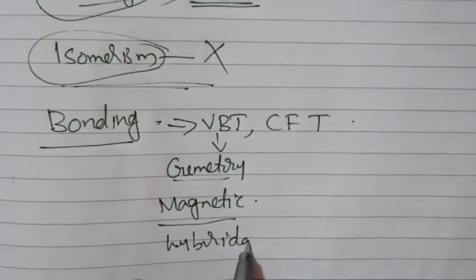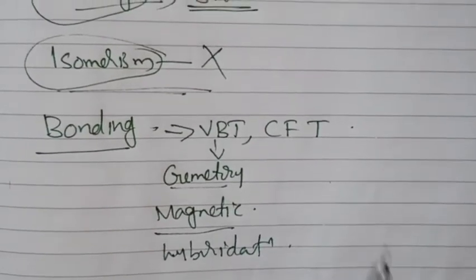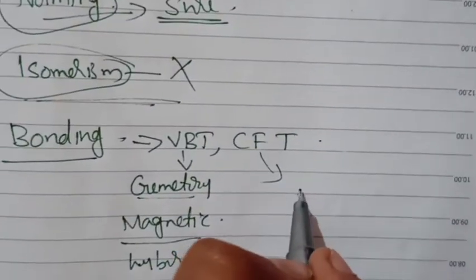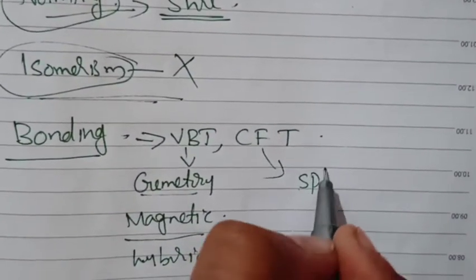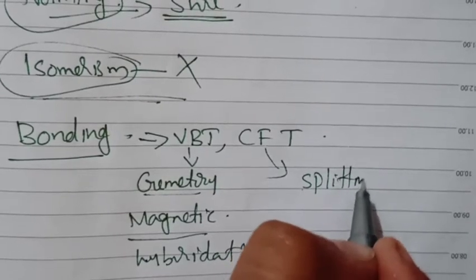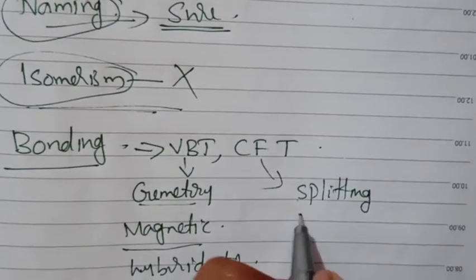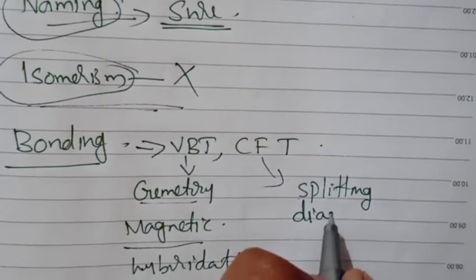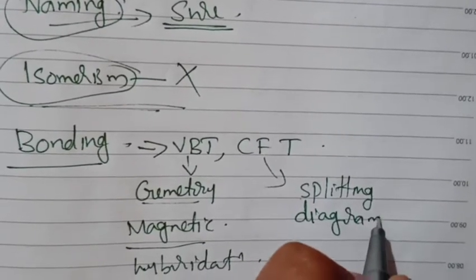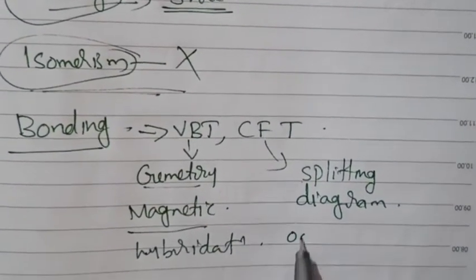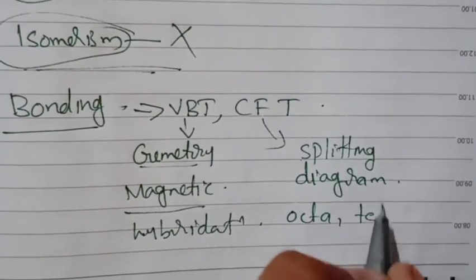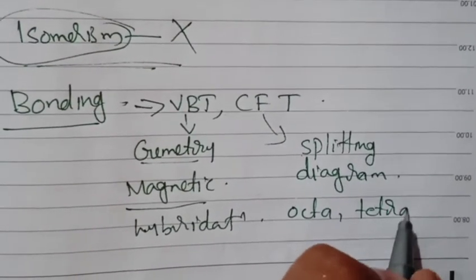The second theory is Crystal Field Theory, or CFT. The important aspect of CFT is the d-orbital splitting diagram. This includes diagrams for octahedral compounds and tetrahedral compounds. The d-orbital splitting diagram is the most important concept from Crystal Field Theory.